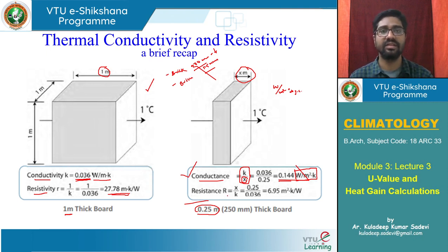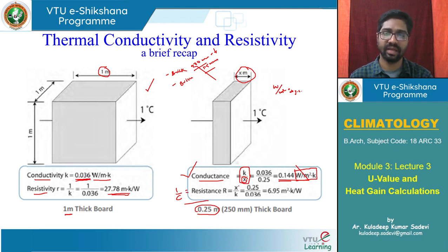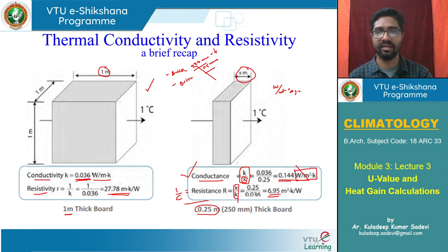Resistance is represented as 1 divided by conductance. If conductance is K/X, then resistance is X/K. Once we do the calculations, resistance comes out as 6.95 m²·K/W. This is the basic comparison between conductivity, resistivity, conductance, and resistance.